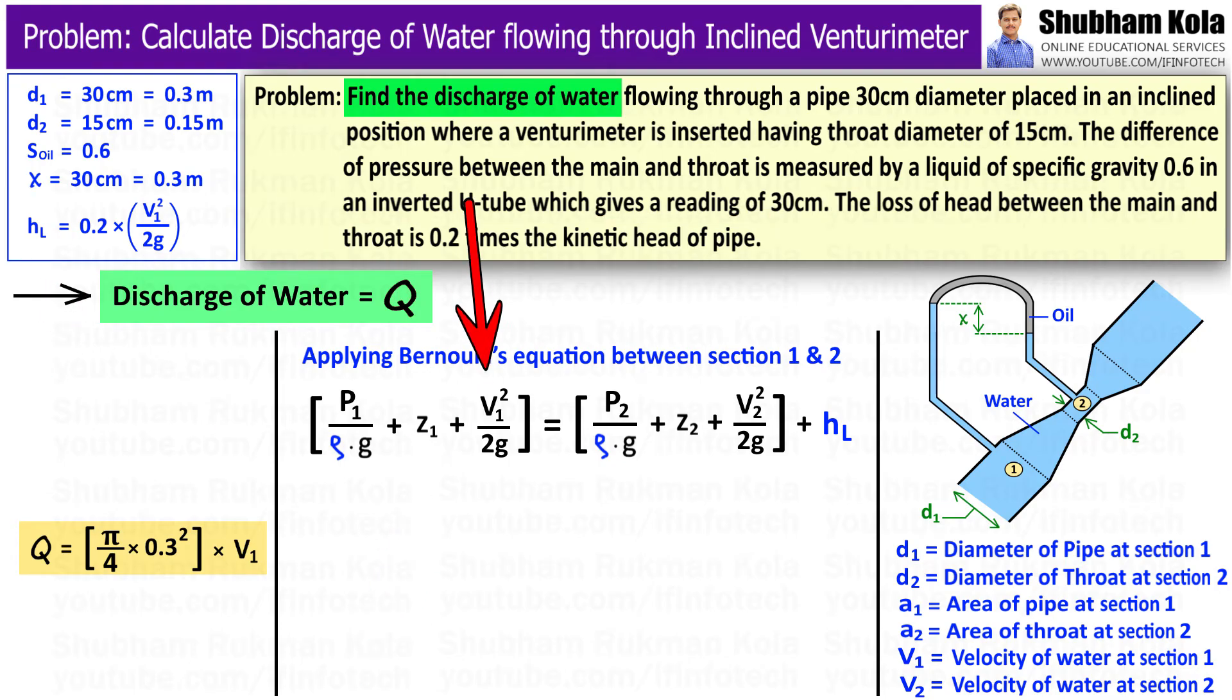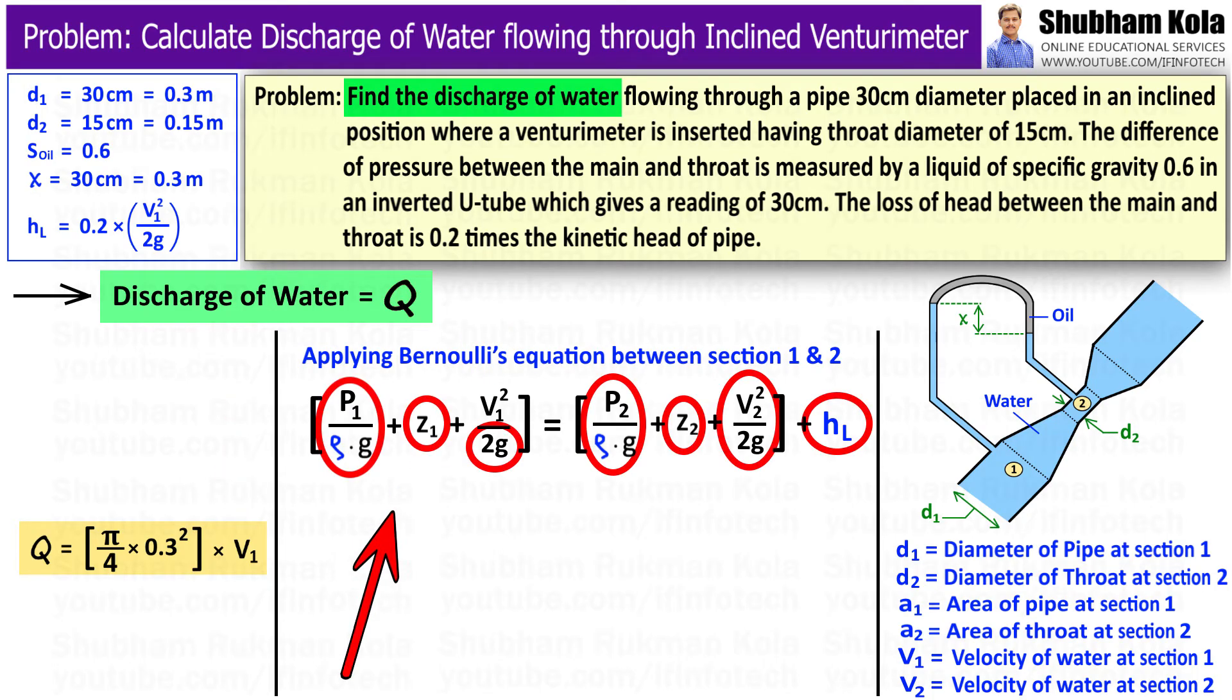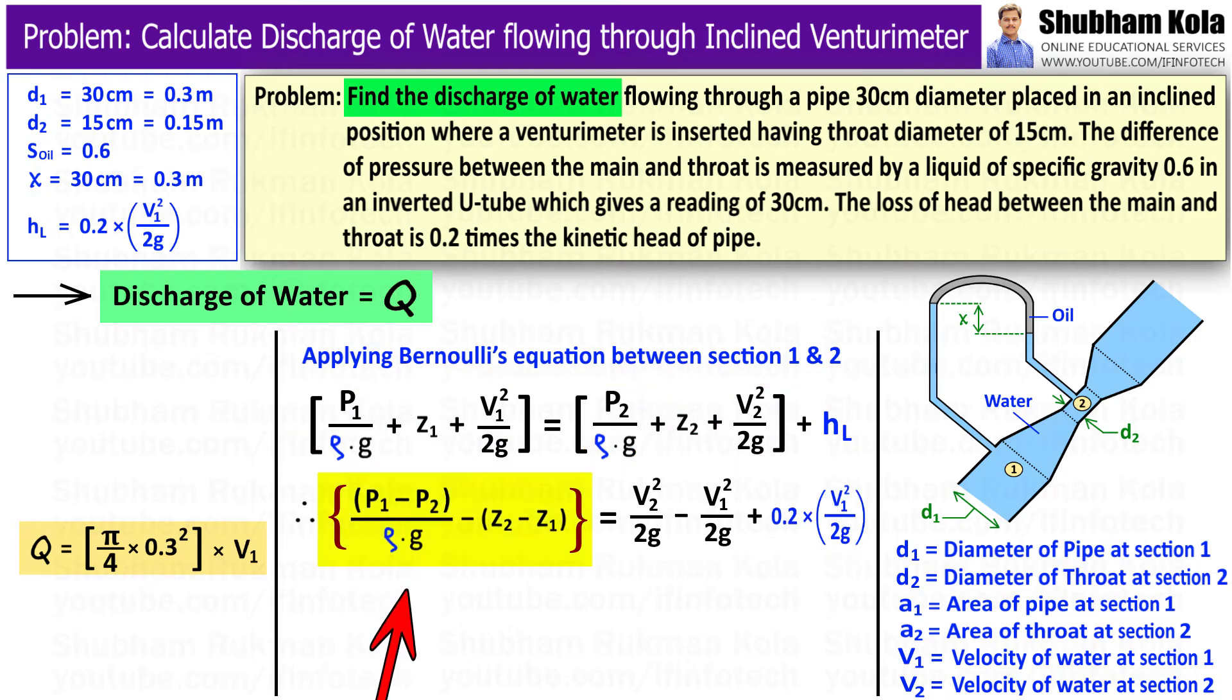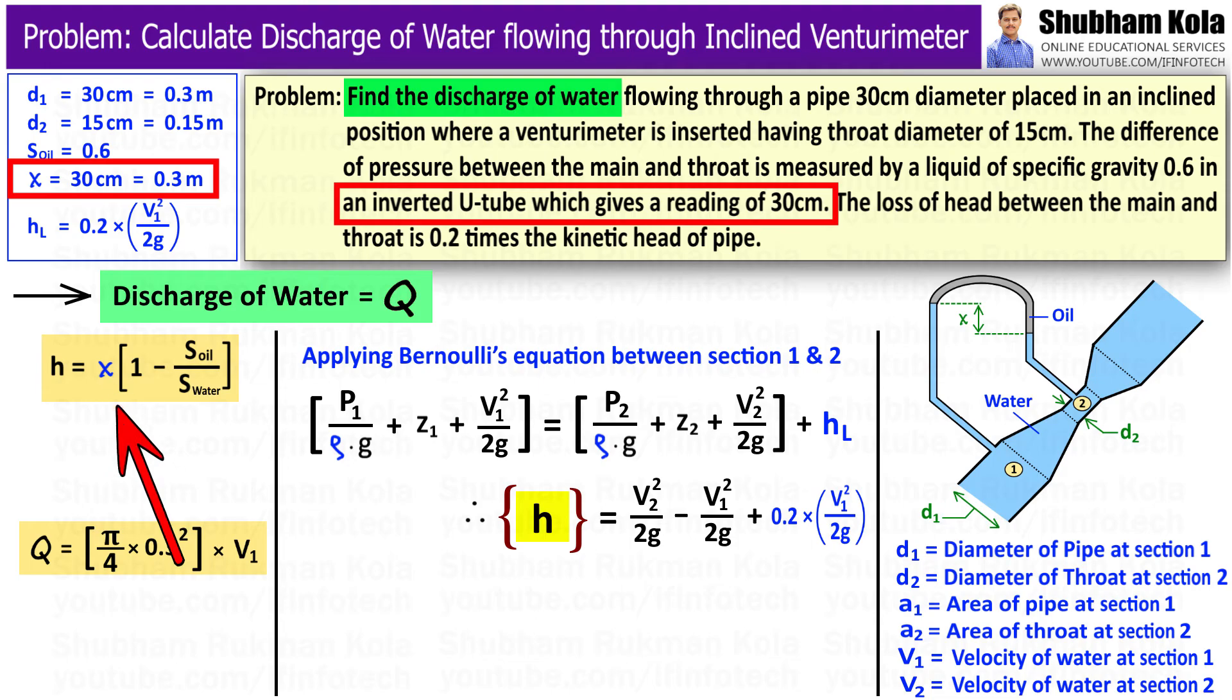Here we want to determine v1 value, because with this value we can calculate discharge. To calculate v1, I will first evaluate the remaining values of the equation. I will rearrange the equation to separate the term p1 minus p2 upon ρg minus z2 minus z1, because this part is nothing but the small h, which we can calculate with the help of small x, which is the manometric reading given as 0.3 m.